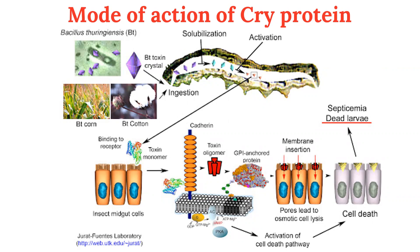The BT toxin protein exists as inactive protoxin — 'pro' means inactive. When the pest, which is the bollworm of cotton, ingests the leaves and buds, this inactive toxin gets activated due to the alkaline pH of the gut of the insect. The activated toxin binds to epithelial cells of the mid-gut. The suitable pH solubilizes the protein crystals, creating pores, causing swelling, lysis, and finally the caterpillar stage of the pest gets killed.